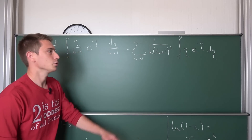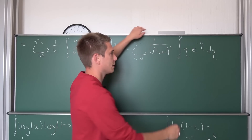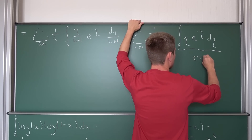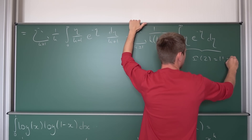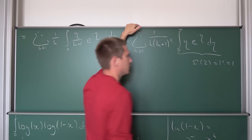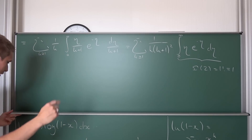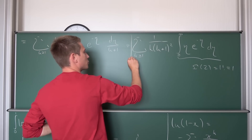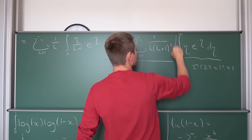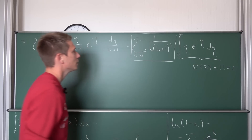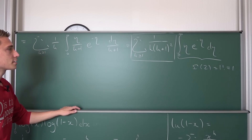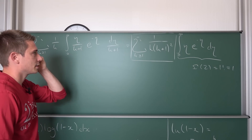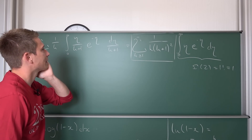The integral from 0 to ∞ of η · e^{-η} dη is nothing but the gamma function Γ(2), which equals 1! = 1. So the whole thing reduces to just the infinite series: the sum over k ≥ 1 of 1/(k·(k+1)²).